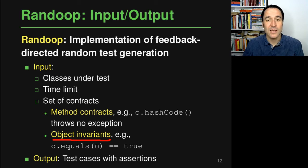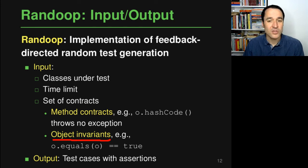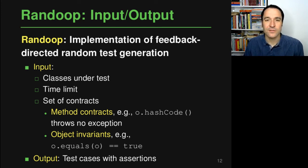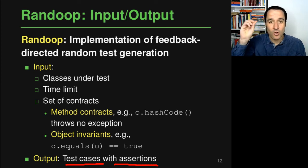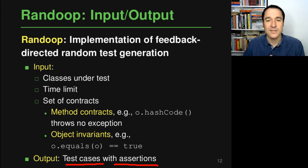For example, you could specify that any object dot equals the same object again should always be true, which is also informally specified in the Javadoc of the equals method. Given these three inputs—the classes under test, the time limit, and a set of contracts—Randoop produces test cases that include assertions. It's not just calling methods of the class under test to exercise it; the test cases also have assertions or oracles to check that the behavior fulfills the set of contracts given as input.